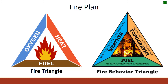We have two different triangles to be aware of. In order to have any kind of fire, we need oxygen, heat or an ignition source, and fuels. As land managers, out of those three components, the only one that we can manage for is fuels.